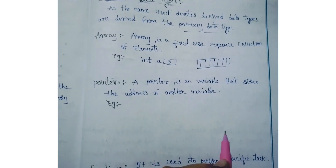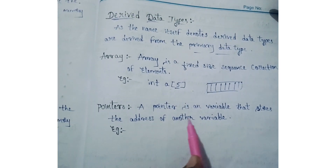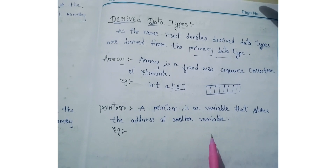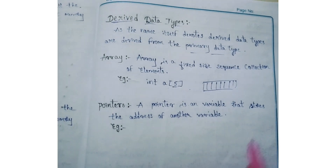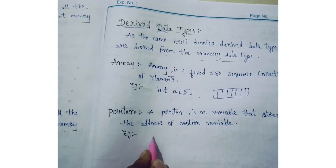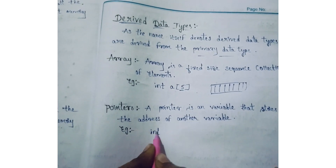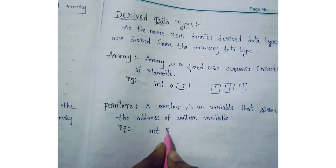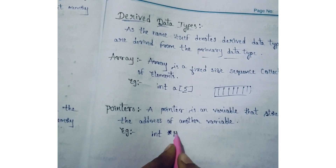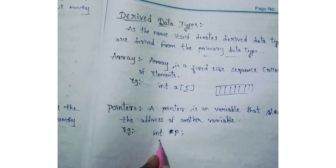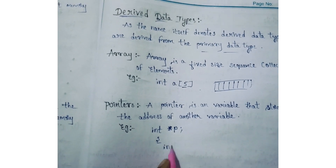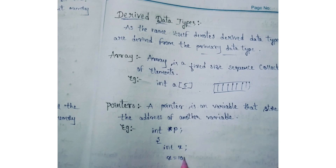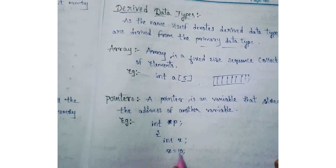Pointers — a pointer is a variable that stores the address of another variable. For example, int pointer p is a pointer. Int x — x value is 10, so int x is equal to 10.